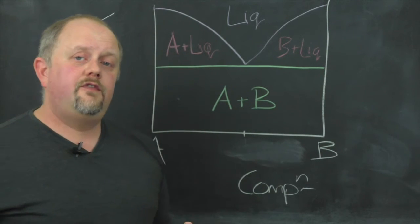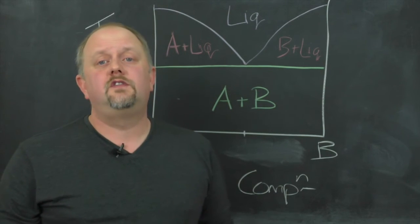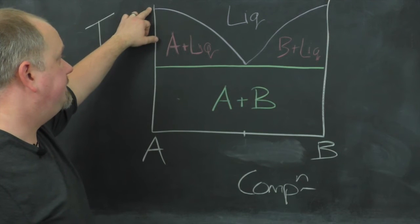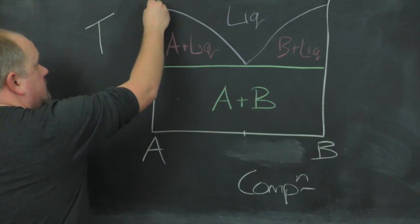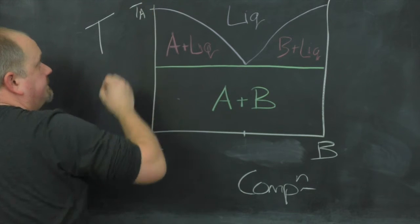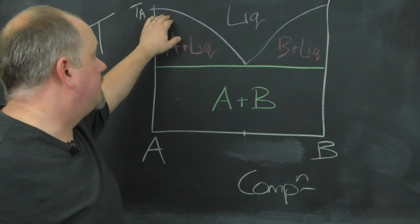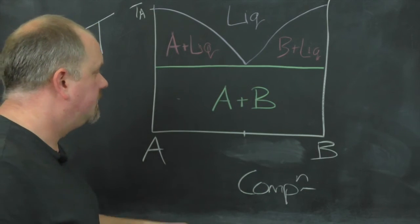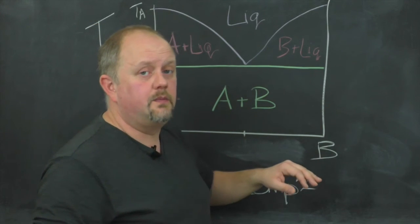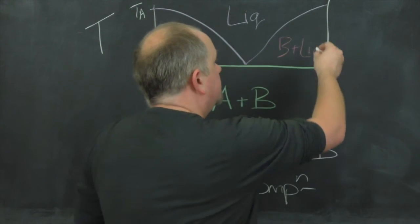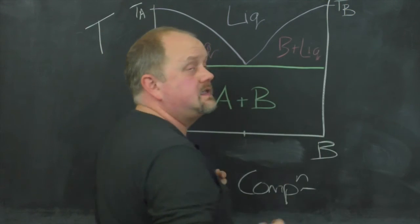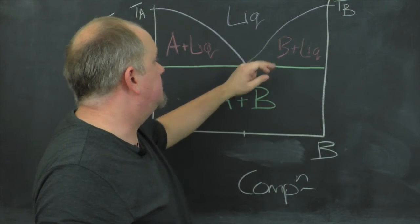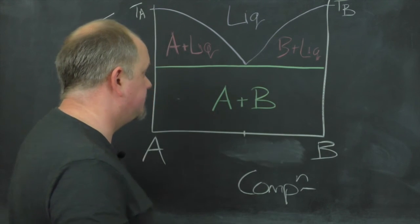We can see here the effect of adding an impurity phase to a pure compound. If you take for example pure A, it melts at some temperature TA. This melting point reduces as we add more of the impurity phase, more of B. Similarly, if we look at component B, we have some melting point TB, and the melting point decreases as we add some impurity A to the system.